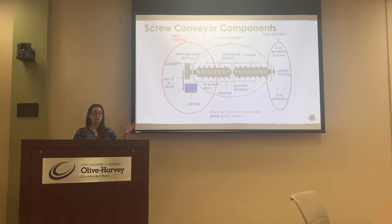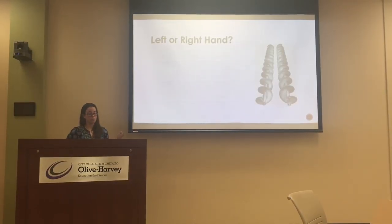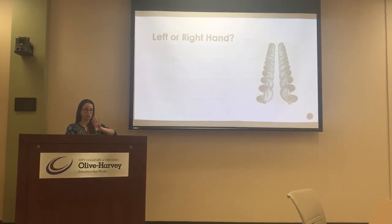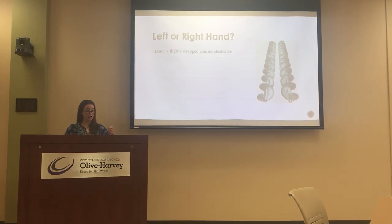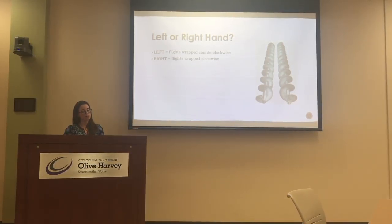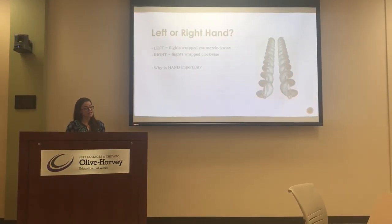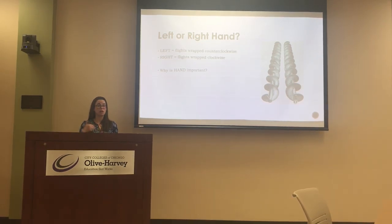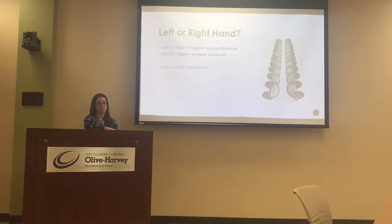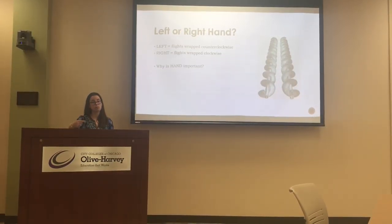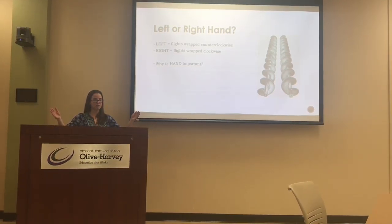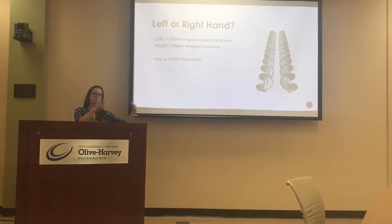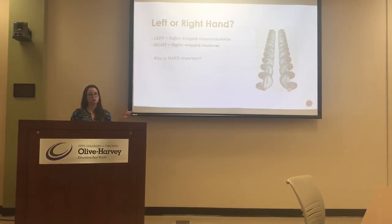We'll remember from week one that the pitch of the screw was the distance between those flights. We'll notice that in a standard screw it's all equal. We also have this idea of left or right hand — which direction the screw wraps around that center shaft. Left hand means flights wrapped counter-clockwise; right hand means wrapped clockwise. The hand and the way the screw is turning determines which way the material moves through the conveyor. Right hand with a forward motor goes right to left; right hand with reverse goes left to right.